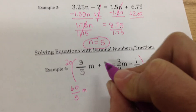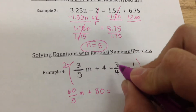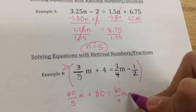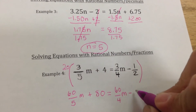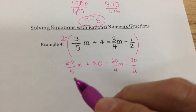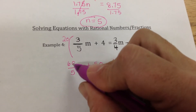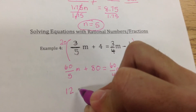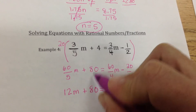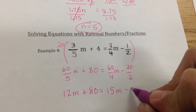So I'm going to have 20 times 3 is 60, still over 5. Then 4 times 20 is 80. Over here, 20 times 3 is 60 over 4, and 20 times 1 is 20 over 2. Now I simplify all these improper fractions — the reason I did this is they're all going to work out to be whole numbers. So 60 divided by 5 is 12, so that's 12m. The 80 just comes straight down. 60 divided by 4 is 15m. And 20 divided by 2 is 10.